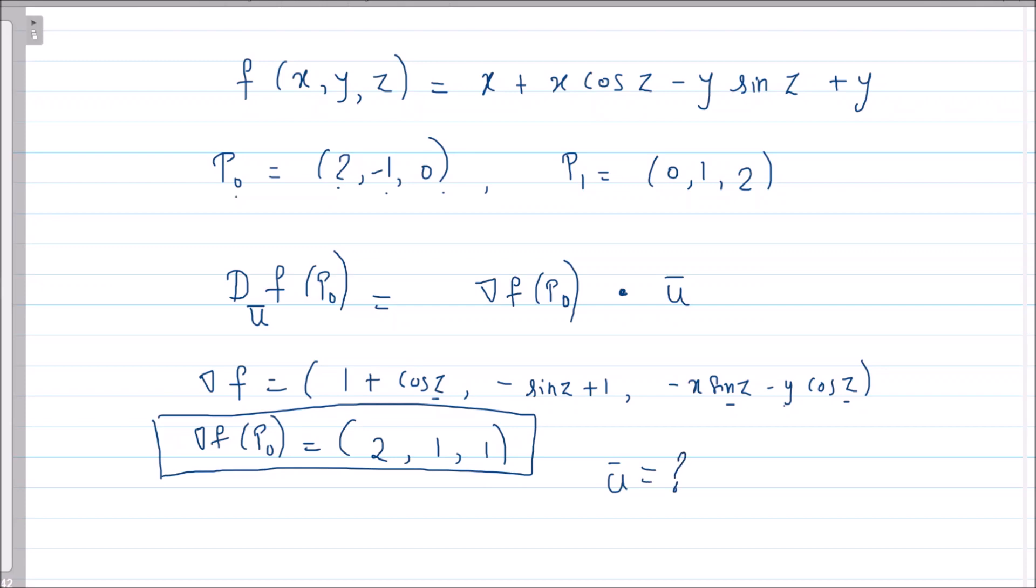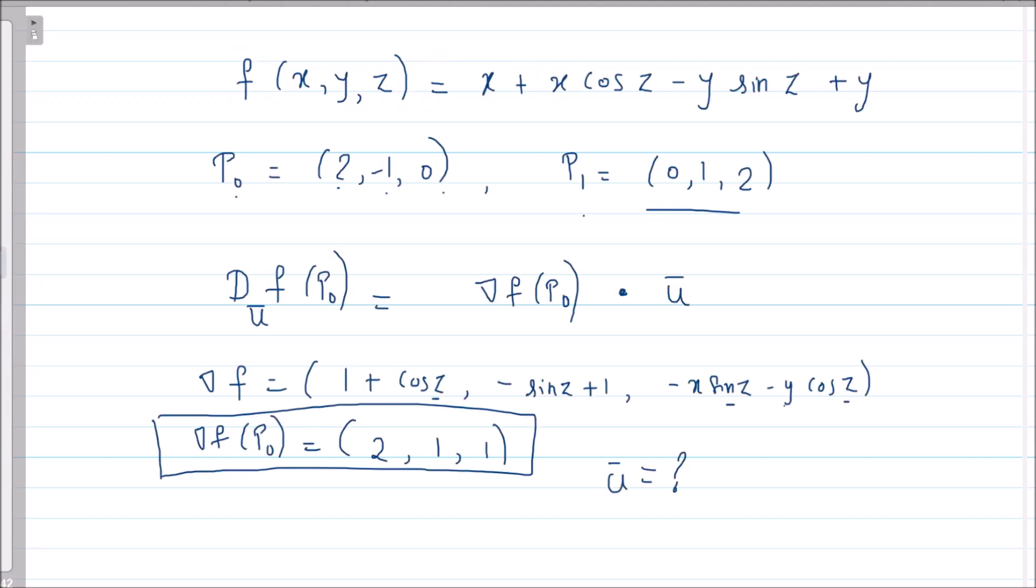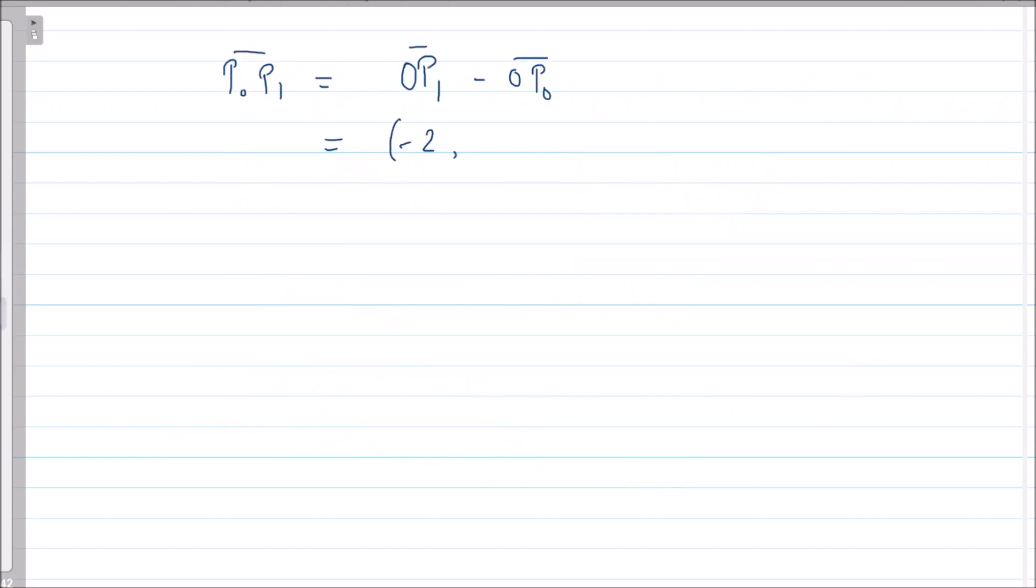If I want to find the direction for this, what I will do is OP₁ minus OP₀. So what is this? This point minus this, so 0 - 2, 1 - (-1) is 2, and 2 - 0. So -2, 2, and 2. Please cross check the calculation.